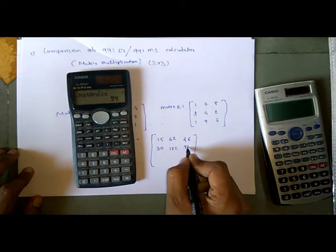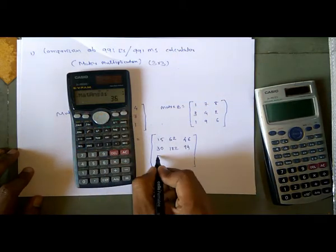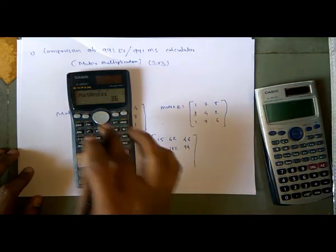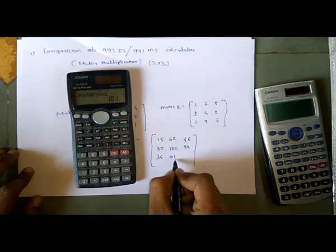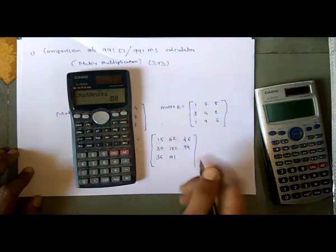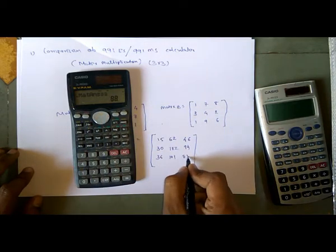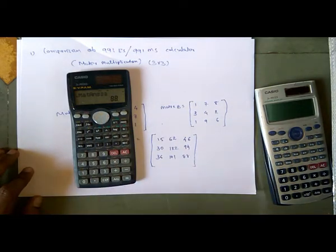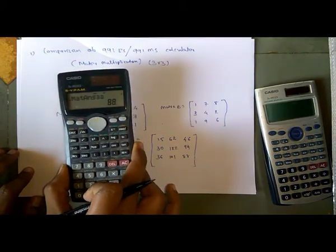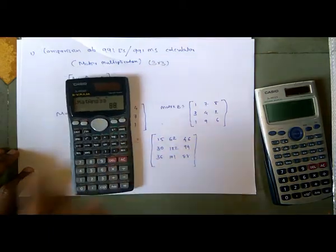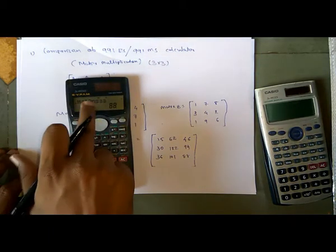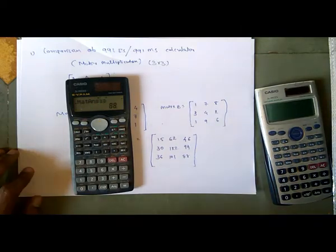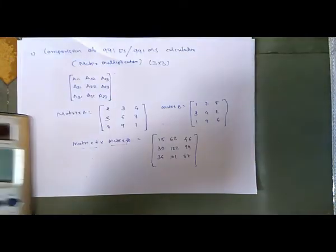Continuing through the results: 122, 94, 36, 101, and the last element is 88. This is a lengthy process and we have to keep track of all data like rows 3,1 through 3,3.